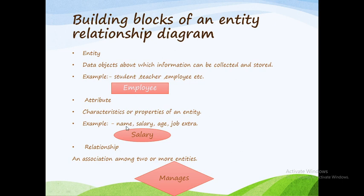Attributes are the characteristics or properties of an entity. For example, for Employee entity: employee name, salary, age, job, employee ID, designation, date of joining, experience, and income are all attributes. Attributes are represented in the form of ellipses — so salary, name, age, and job are each shown in an elliptical shape.